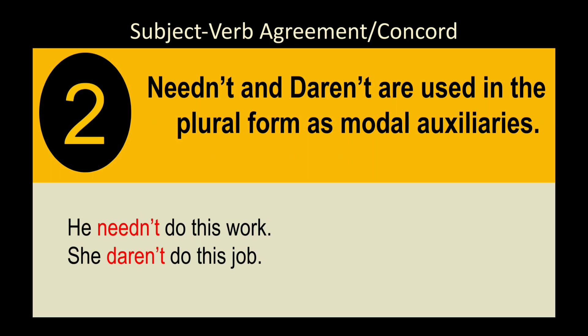Rule 2: 'Need' and 'dare' are used in plural form as modal auxiliaries. Generally 'he/she' are followed by verb's first form plus 's,' e.g., 'He needs to go there.' But in negative form as modals, we say 'He need not do this work' and 'She dare not do this job' — not 'He needs not.' These are not main verbs here.